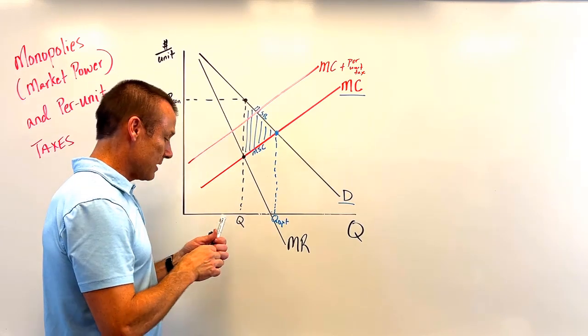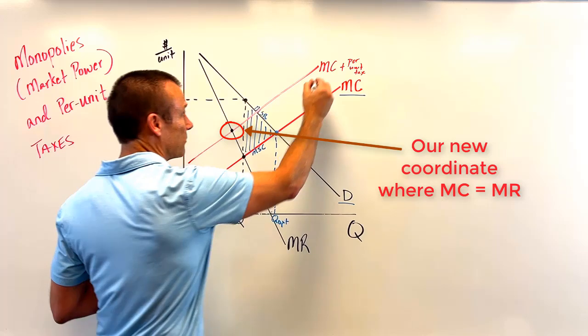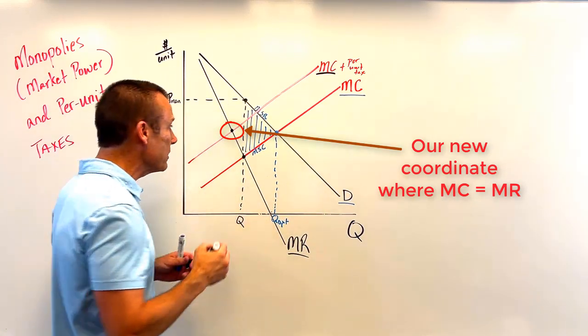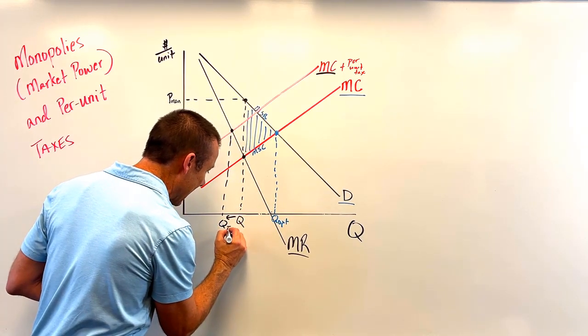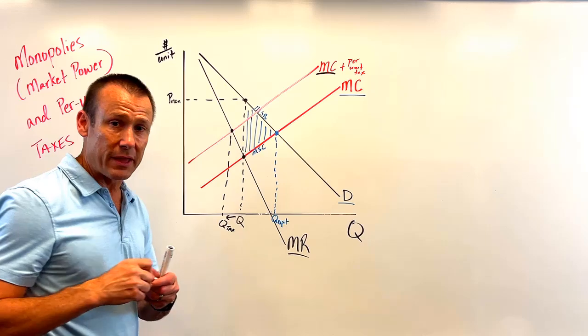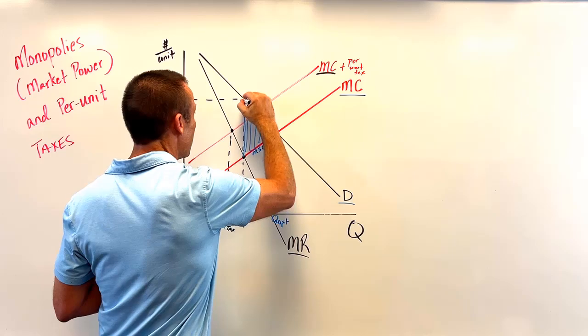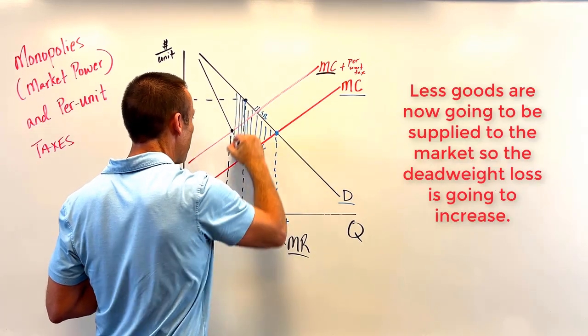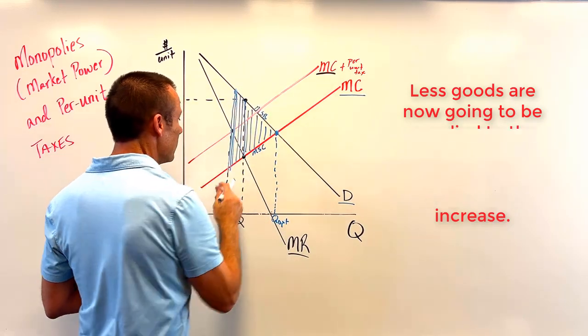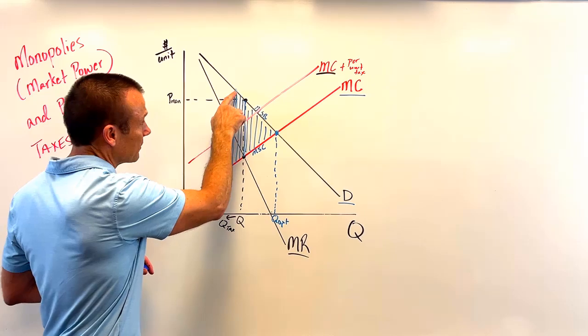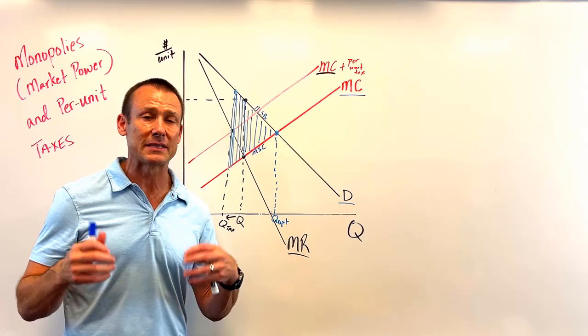Now here is the thing, though: if this is the regulation that we go with, we got to go back to the beginning. We got to find our output again. And where is our output? Well, it's where MR equals MC. So there's my MC, there's my MR. That's where they now equal. So guess what? Output is going to decrease. So there's my Q tax. And when that output decreases, that means the size of this deadweight loss is just going to get bigger and bigger and bigger.